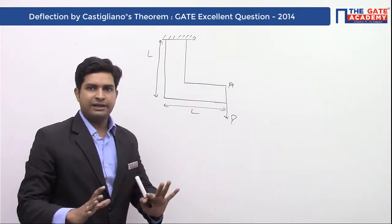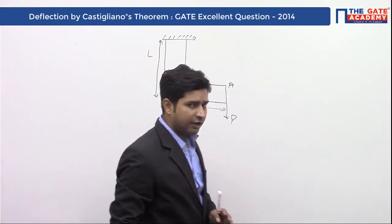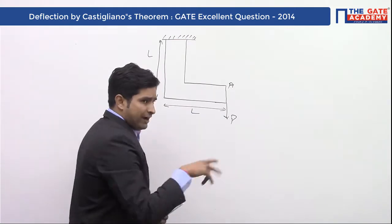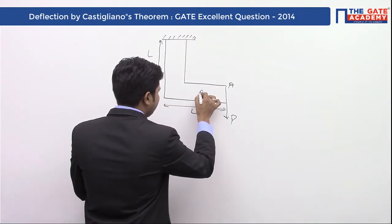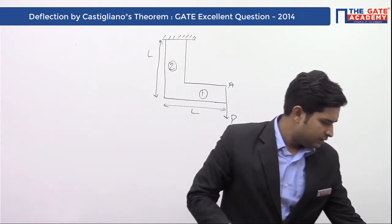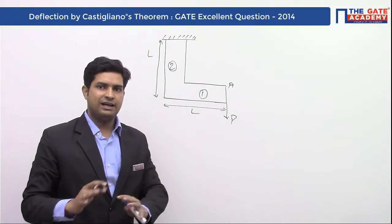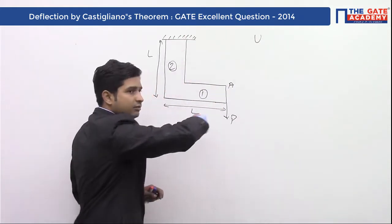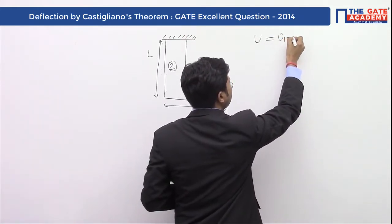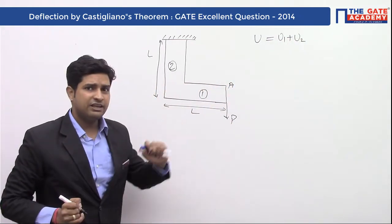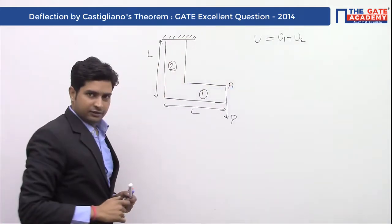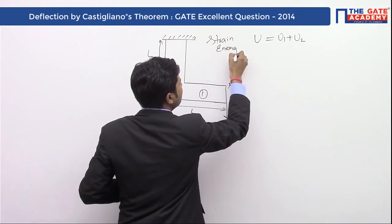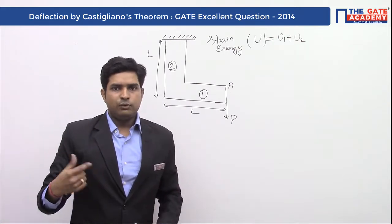What we have to do in this question is find out the strain energy. We divide the frame into two parts: the first part and the second part. We find out the strain energy for each part separately. The total strain energy U of this frame equals U1 plus U2, where U1 is the strain energy for part one and U2 is the strain energy for part two.